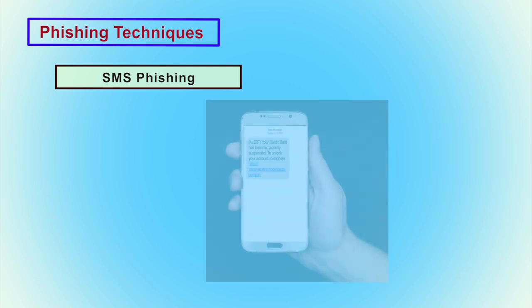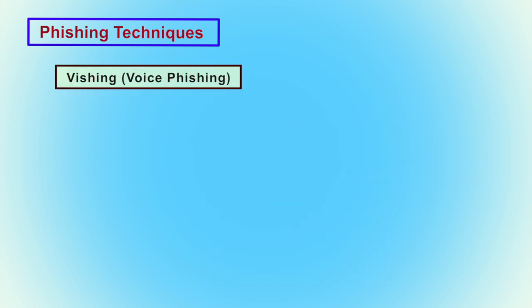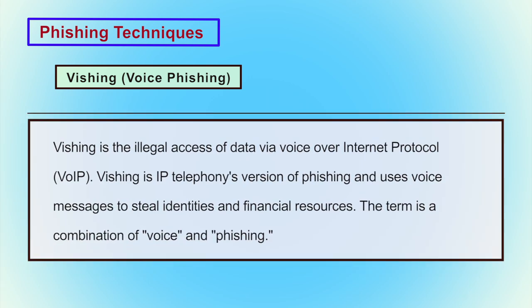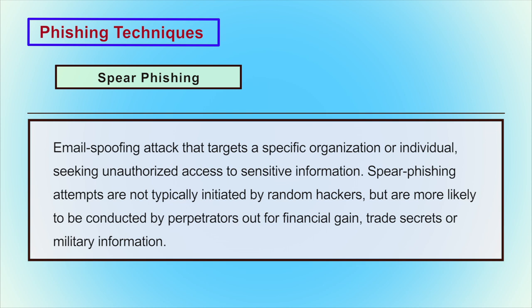SMS phishing: a simple text message is sent to the user containing a hyperlink, and clicking that link takes the user to a phishing website. Vishing (voice phishing): the user gets a phone call from a miscreant pretending to be calling from a bank, financial institute, or popular organization, requesting personal information such as credit card details, ATM card details, or online banking username, password, and transaction passwords. Spear phishing: miscreants target a specific organization to steal business documents or intrude into the organization's network to get valuable information.